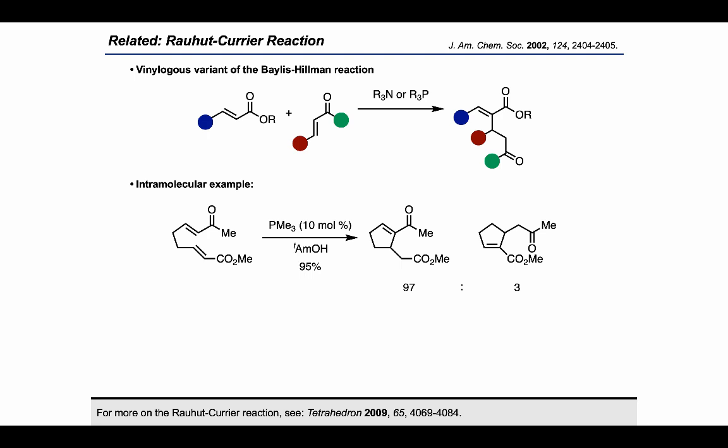As a quick intramolecular example, it's been shown that a substrate bearing an enone and an enoate can undergo a Rawal-Currier reaction to cyclize under the action of trimethylphosphine. This proceeds under the same mechanism, where the phosphine activates the pronucleophile — in this case predominantly the enone, although the enoate can also be activated to a much lesser degree.